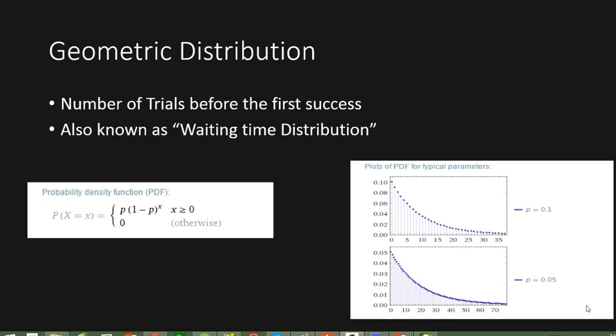In this video, I'm going to discuss the probability distribution known as geometric distribution. Geometric distribution is a type of distribution in which we try to find the number of trials before the first success, or the number of trials it takes before we get the first desired outcome.